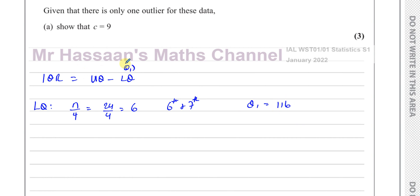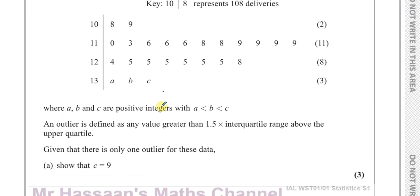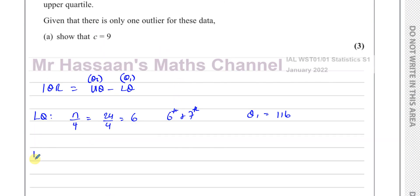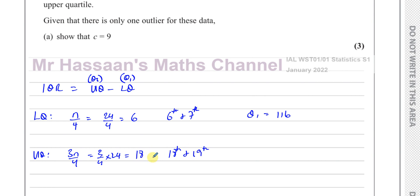The lower quartile is given the symbol Q1, the upper quartile Q3, and the median Q2, which we don't really need in this case. The upper quartile is found by doing 3 times n over 4, which is 3 quarters of 24 — that's 3 times 6, which is 18. So we're looking for the 18th and the 19th entry. When the result comes out as a whole number, you take that entry and the one after it. If it comes out as a decimal, you'd round up to the next number.